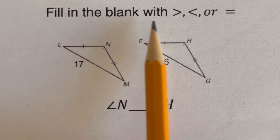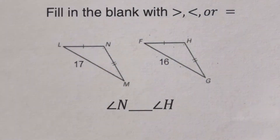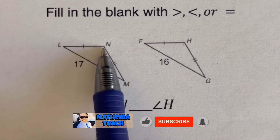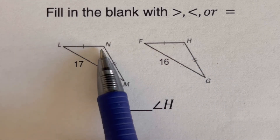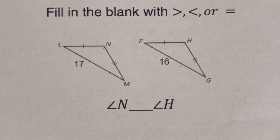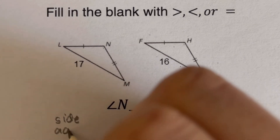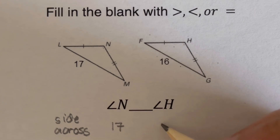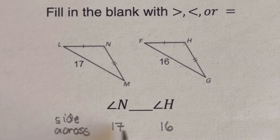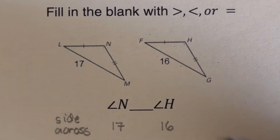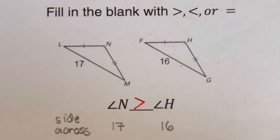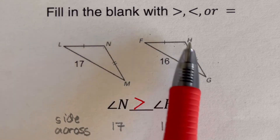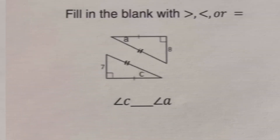In the next example, we determine the relationship between angle N and angle H. The side across angle N is 17 and the side across angle H is 16. Since 17 is greater than 16, angle N is greater than angle H — the larger opposite side means the larger angle.